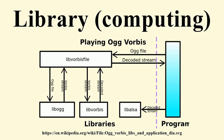What distinguishes the call as being to a library versus being to another function in the same program is the way that the code is organized in the system. Library code is organized in such a way that it can be used by multiple programs that have no connection to each other.